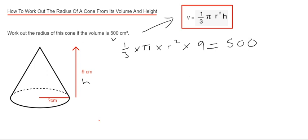So the next thing we can do then is get rid of the third. We can do that by dividing both sides by a third. So on the left we've got pi times r squared times 9. If we divide 500 by a third, that will give us 1500. It's exactly the same as multiplying it by 3.